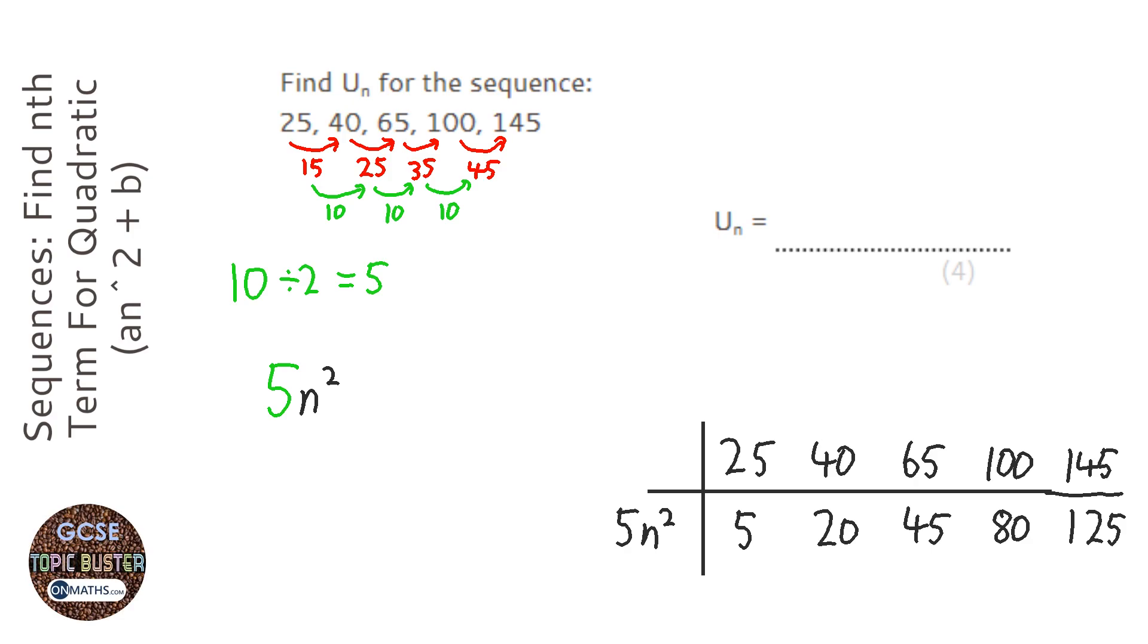Okay, now you might notice something about how I said 6 squared—5 squared is 25, times 5 is 25. So you might notice how to get from the sequence given to us in the question to the 5n² sequence.